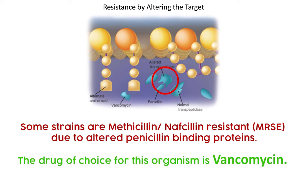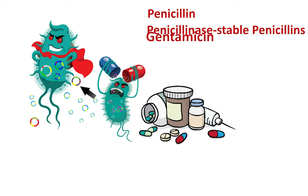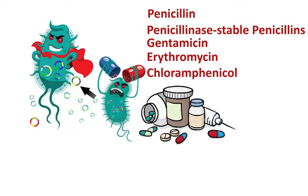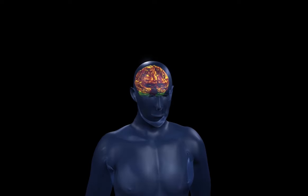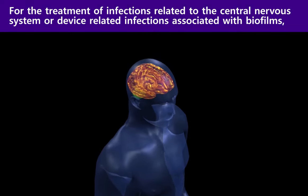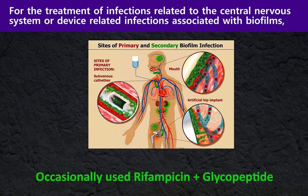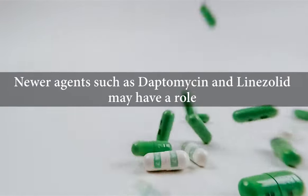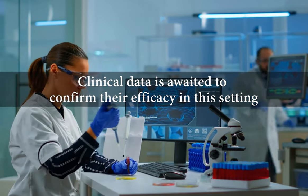The drug of choice for this organism is vancomycin. Strains resistant to penicillin, penicillinase-stable penicillins, gentamicin, erythromycin, and chloramphenicol are common. Vancomycin or teicoplanin should be used for systemic infections. For treatment of central nervous system or device-related infections associated with biofilms, rifampicin is occasionally used in combination. Lipopeptide agents such as daptomycin and linezolid may have a role, but clinical data is awaited to confirm their efficacy.